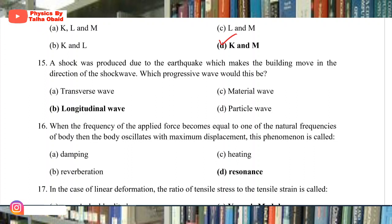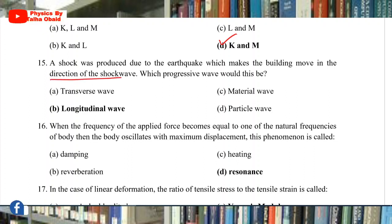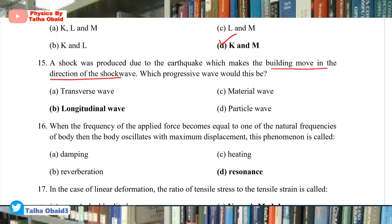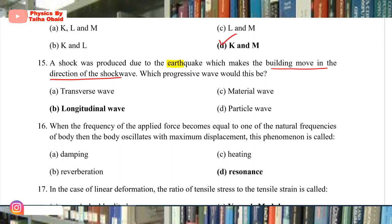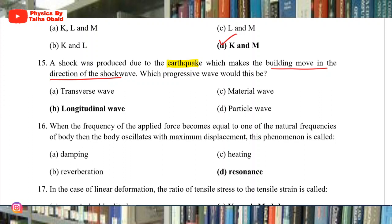Question 15: A shock was produced due to an earthquake which makes the building move in the direction of the shock wave. Remember, if particles vibrate in the line of propagation of the wave, such a wave is called a longitudinal wave. Here the buildings were vibrating in the same direction as the wave — so this is a longitudinal wave.